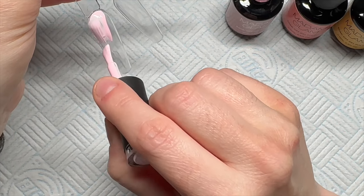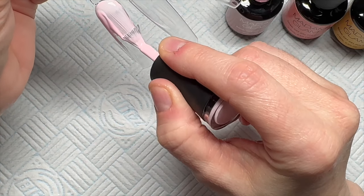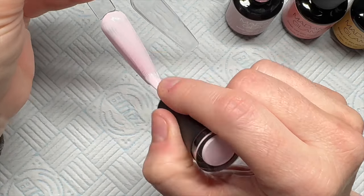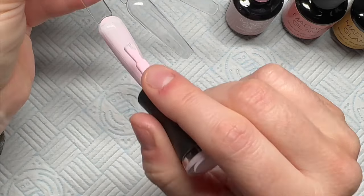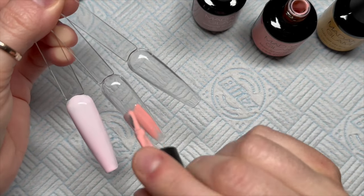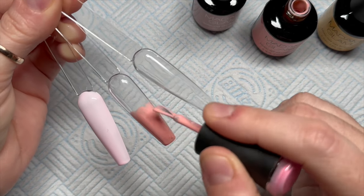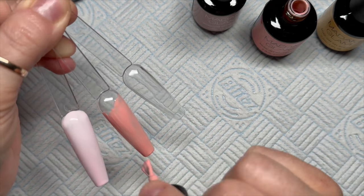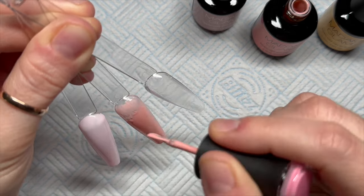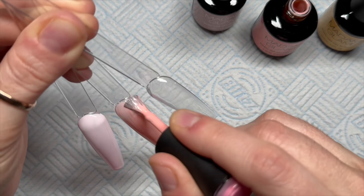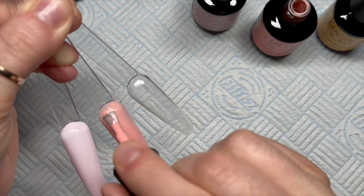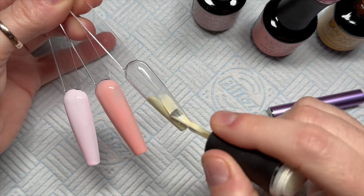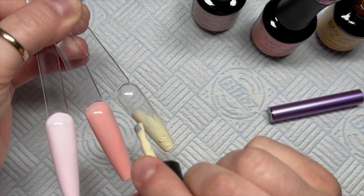I didn't think it was worth me showing you applying both coats because it's a very similar process. Also, Madam Glam gel polishes these days do need a 60 second cure. The last one of the first three here is a pastel yellow.